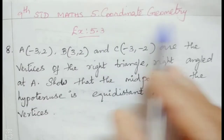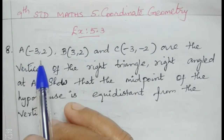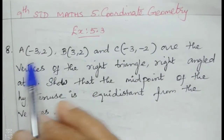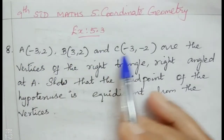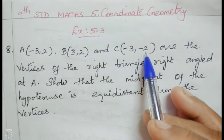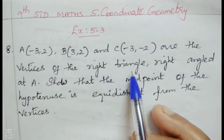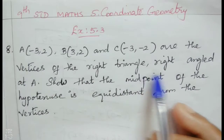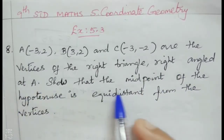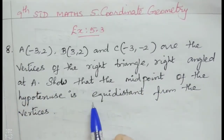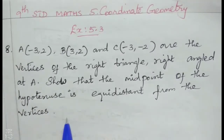Chapter 5, Coordinate Geometry, Exercise 5.3, Question 8. A(-3, 2), B(3, 2), and C(-3, -2) are the vertices of a right triangle with the right angle at A. Show that the midpoint of the hypotenuse is equidistant from the vertices.